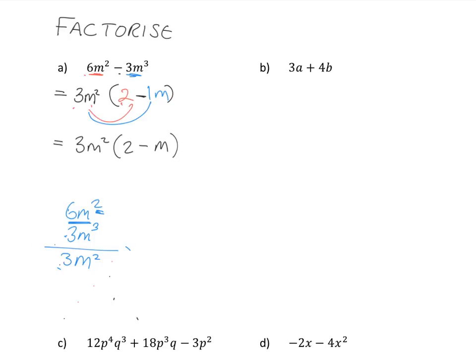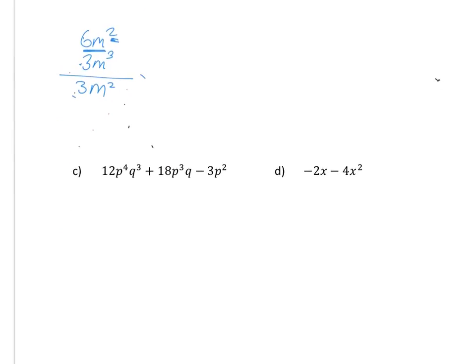What about this next one? This next one's funny because if we try and find your highest common factor, 4 and b, what whole number goes into 4 and 3 with no remainder? The biggest one is 1. Can I include an a? No, because there's no a here. Can I include a b? No, because there's no b here. So in fact, this one, the highest common factor is just 1. And there's no point in taking out 1 because then I'll just have 1 times 3a plus b. So this thing can't be factorized. It just stays as is 3a plus 4b.